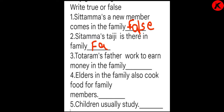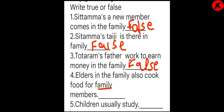She died a few months ago — false. Tota Ram's father works to earn money in the family — Tota Ram ke papa aur uske chacha dono kamaate thay — so this is also false. Elders in the family also cook food for family members — true. Children usually study — true.